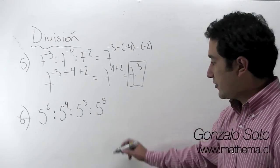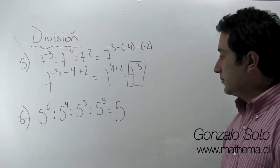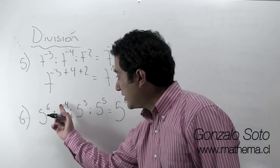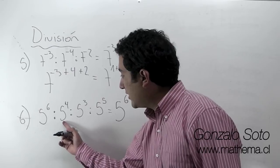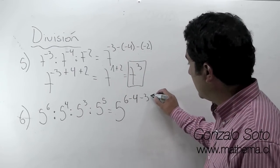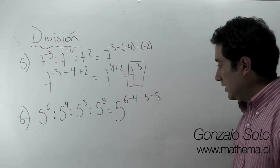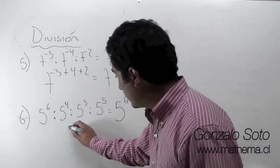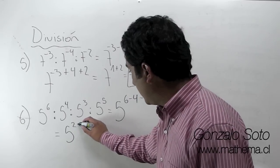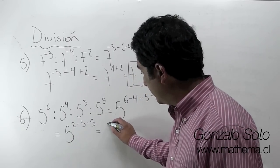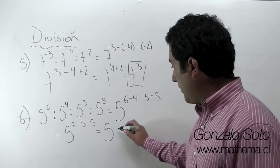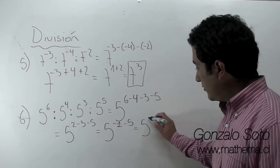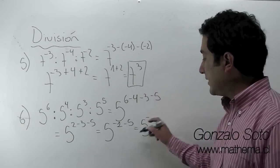En el caso 6 tenemos que la base es 5. 6 menos 4; aquí también hay una división, fíjense, como hay una división, está en menos — estamos restando. Como hay una división entre estos, también en menos: menos 3 y menos 5. Entonces: 6 menos 4 es 2, menos 3, menos 5. 2 menos 3, menos 1, menos 5. Menos y menos: conservamos el signo y sumamos las cantidades, nos queda menos 6.